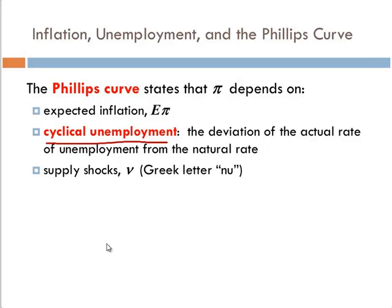I'd rather just call it deviation from the actual unemployment rate and the natural unemployment rate. So the actual unemployment rate minus the natural rate of unemployment. And then finally, supply shocks.